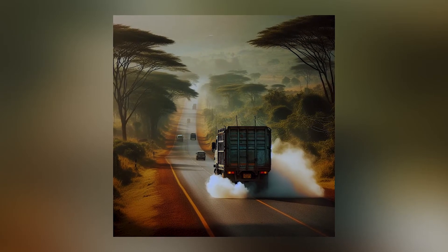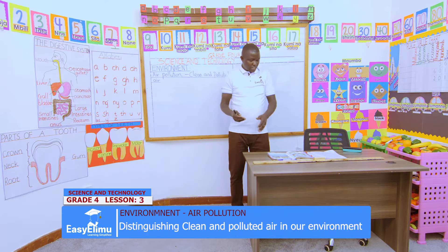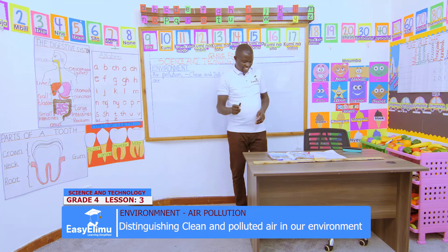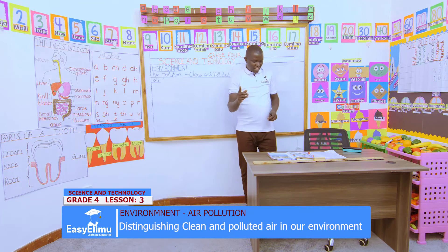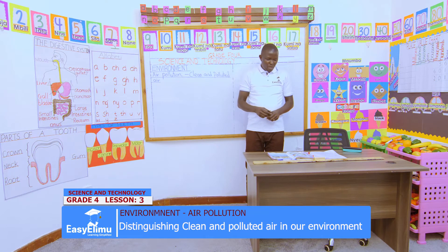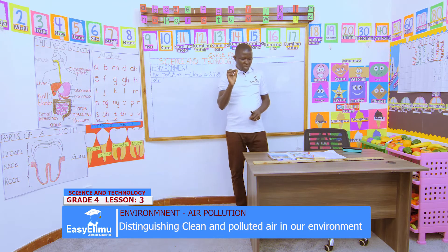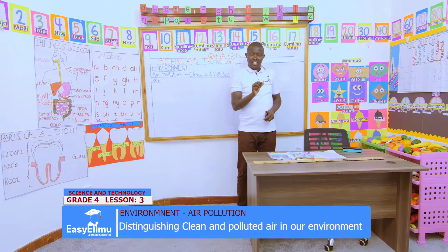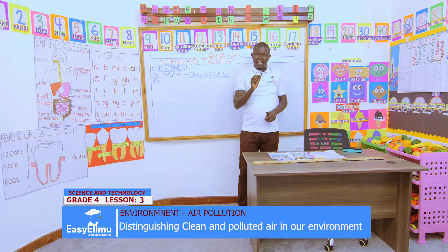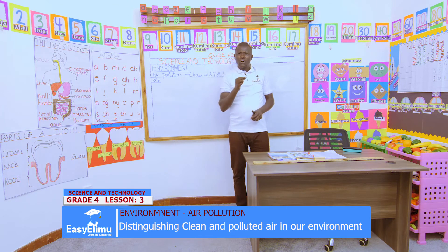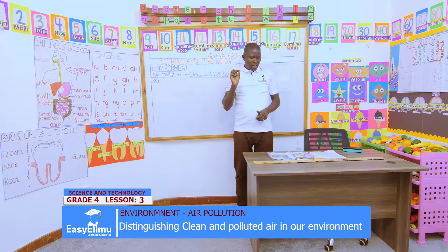And for you Tom, in picture two, what can you see? Can you clap for Tom? Thomas said he can see a boy pinching his nose because he is in the toilet and there is a foul smell coming from the toilet. So the smell is affecting the air around that place.